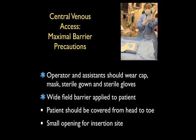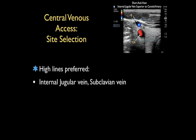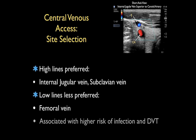It is important to place a wide field barrier over the patient from head to toe with only a small opening for the insertion site. The fourth step is adequate attention to site selection. In general, high lines are preferred — the internal jugular vein and subclavian vein are associated with decreased infectious risk. Low lines, such as placement into the femoral vein, carry a higher risk of infection and DVT.